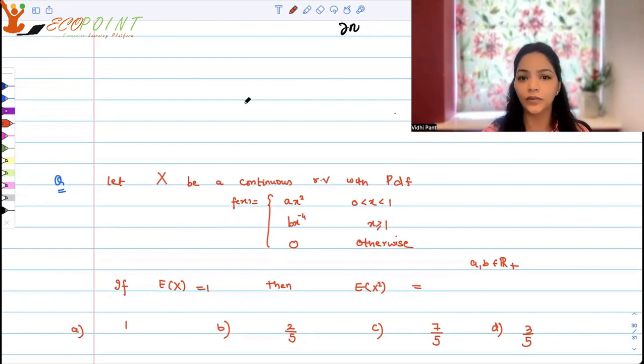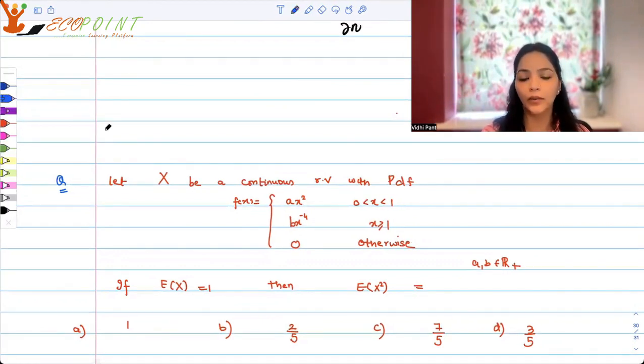Today I have a question from random variables. Let X be a continuous random variable with PDF given as ax squared when x is between 0 to 1, b upon x to the power 4 when x is greater than or equal to 1, and 0 otherwise, where a and b are positive real numbers. If expected value of x is equal to 1, then what would be expected value of x squared?